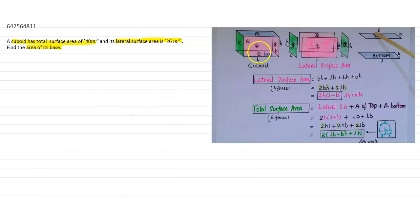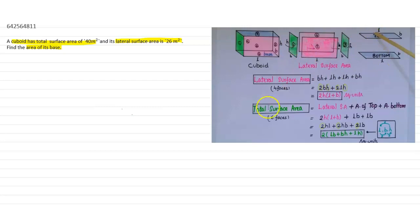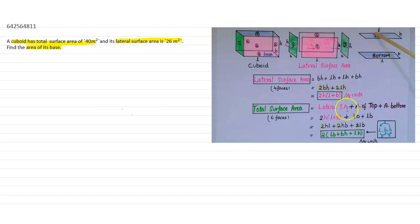This is a cuboid. The lateral surface area of a cuboid is the sum of the area of four walls, that is excluding top and bottom. The total surface area is the sum of the lateral surface area and the area of top and bottom — that is the sum of all sides including top and bottom — and that is called total surface area.